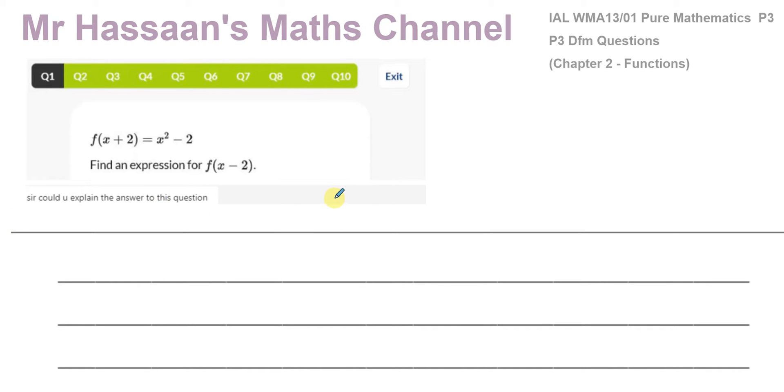All right, so one of the students has asked me to explain the question. So we have here f(x + 2) is equal to x squared minus 2. So we don't have the original function. We don't know what f of x is. Now we need to find what f of x is so that we can find f(x - 2). So once we find f of x, we can then substitute x minus 2 in there, and then we'll have the function f(x - 2).